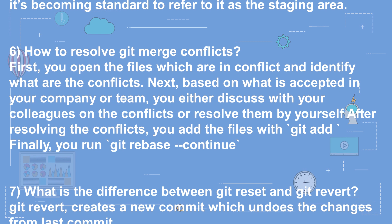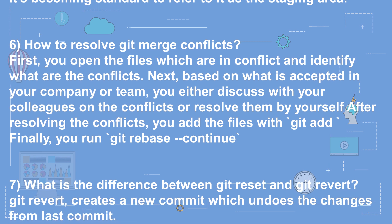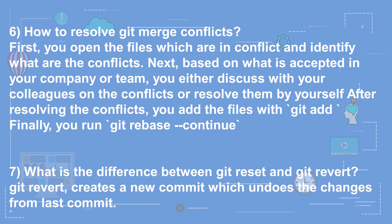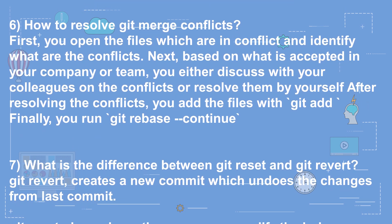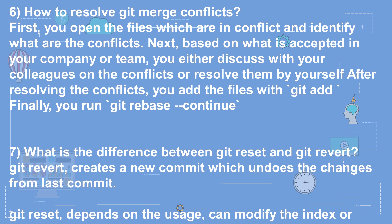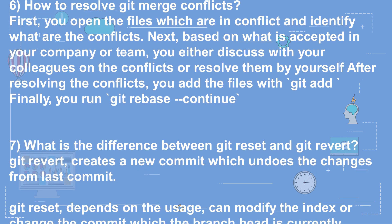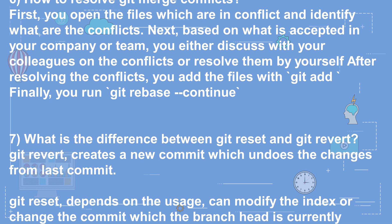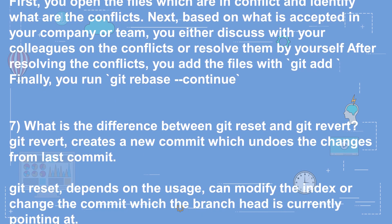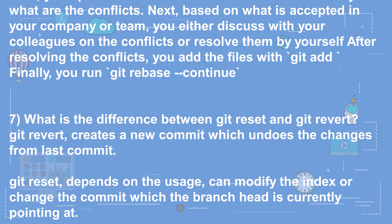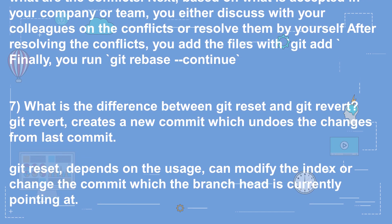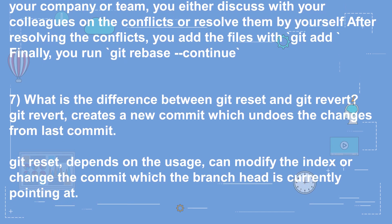Question 7: What is the difference between git reset and git revert? Git revert creates a new commit which undoes the changes from the last commit. Git reset, depending on usage, can modify the index or change the commit which the branch head is currently pointing at.